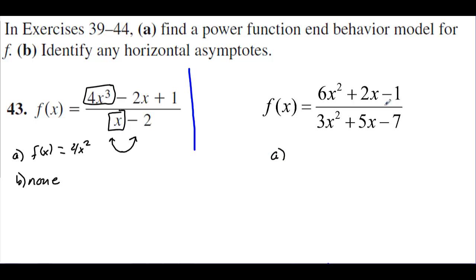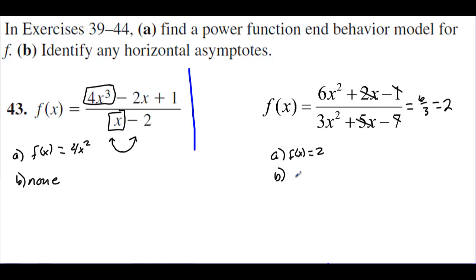For letter a on this one, on the ends it's acting like 6 over 3 because the x squared's canceled — those terms don't matter for end behavior. So we have f of x equals 2; that's how this function behaves on the ends. For letter b, is there a horizontal asymptote? Yes — this function is leveling out to 2 on both sides, so y equals 2 is going to be a horizontal asymptote.